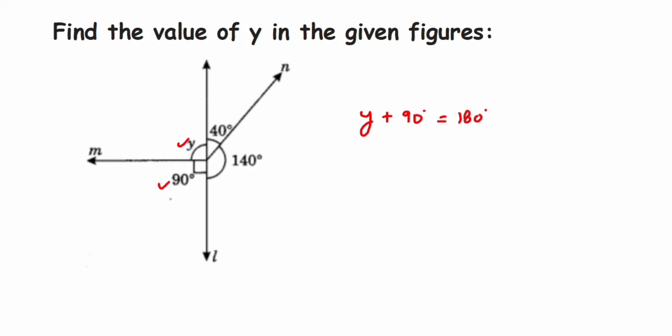Again we are saying this is by linear pair or you can use the straight angle concept, it will be the same. Transpose this 90 to the other side, so y will be equal to 180 degrees minus 90 degrees. So y is equal to 90 degrees.